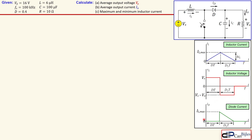The diode current will have a similar shape as before, but it is now chopped off more. We have only the part where the diode is active, which is a smaller part than before. Let's see that in detail for the calculations.